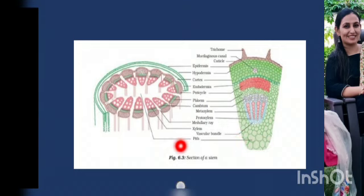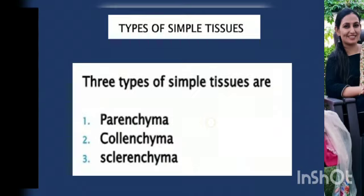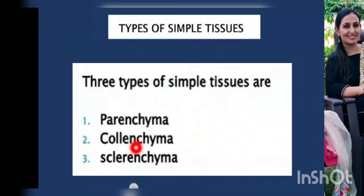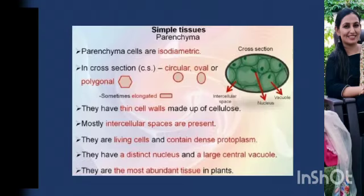The reason for showing you the section of the stem is that in further studies we are going to learn about where each tissue is present. So let us start with the classification and detailed study of the simple permanent tissues. They are of three types: parenchyma, colenchyma and sclerenchyma. Starting with the parenchyma — parenchyma cells are unspecialized and primitive.